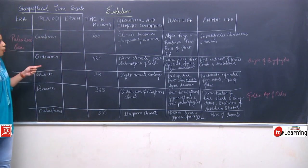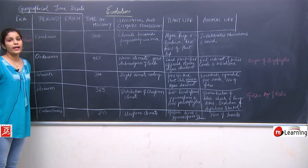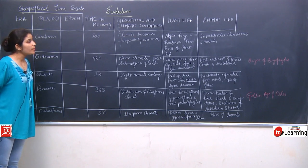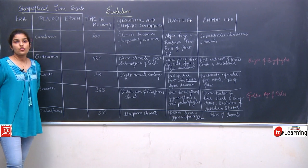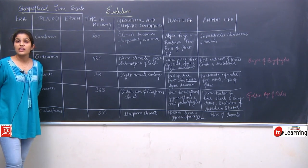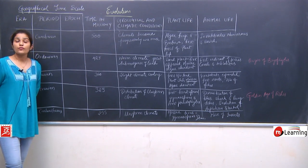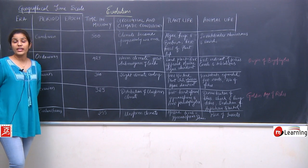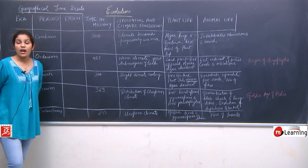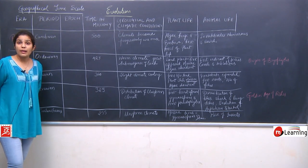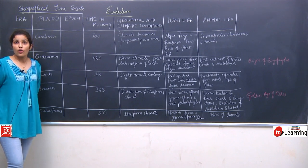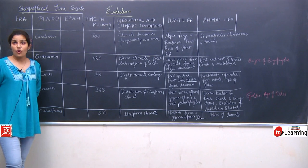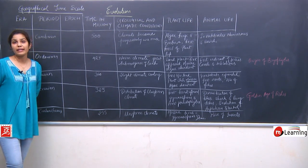The second period is the Ordovician, around 425 million years ago. The climate was warm, and there was a great submergence of land — most of the earth's surface was submerged in water due to the formation of primitive water bodies from torrential rainfall. Much of the earth's land has been under the oceans since around 425 million years ago.